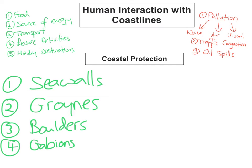Seawalls work by breaking the power of the wave — it is essentially a big wall at the end of the beach. The wave hits the wall, which breaks its power, and this will stop any further erosion of the coastline. Sometimes they're curved at the top so the power of the wave is reflected back on itself. An example would be Bray in County Wicklow.